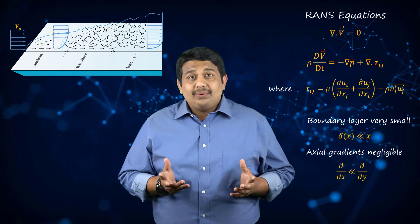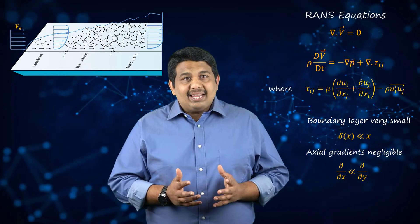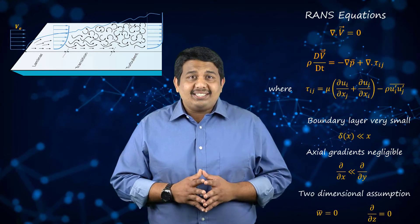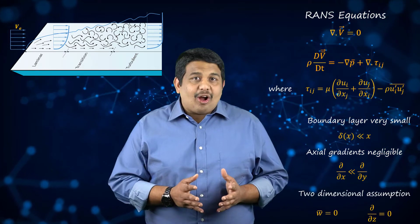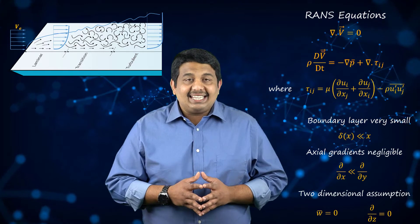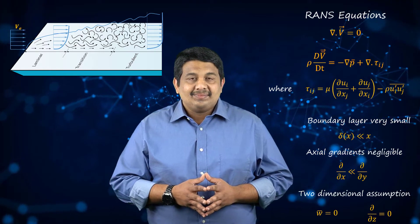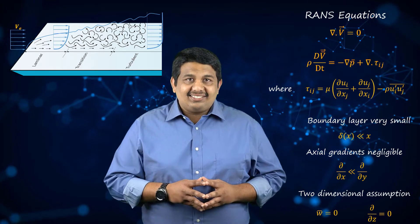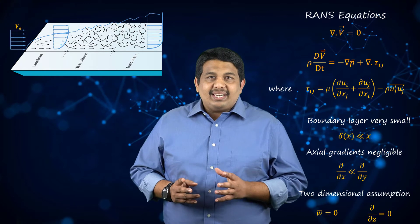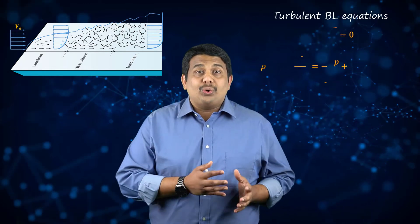Also, since we are assuming that the flow is two-dimensional, all the z components and their derivatives can be neglected. As a result, the RANS equations reduce to those shown here.